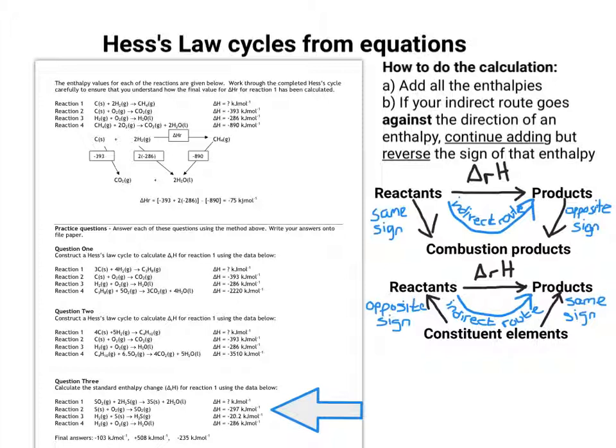And every single one of the indirect route components, reaction 2, 3, and 4, are the formation of something from their constituent elements. And more than just that, they're the formation of one mole of substance from the constituent elements, all reactants and products being in their standard states.